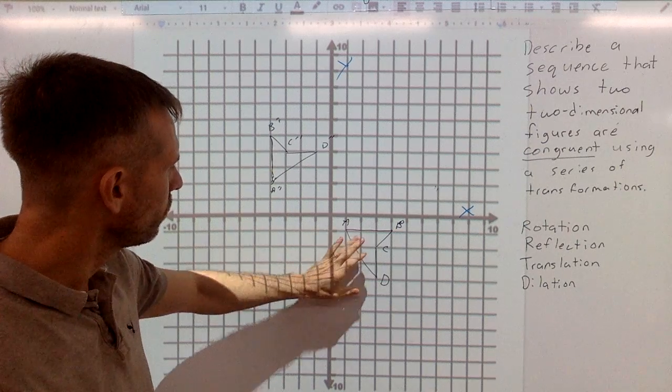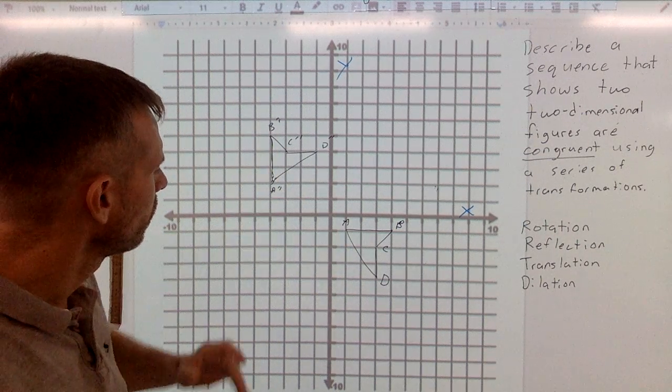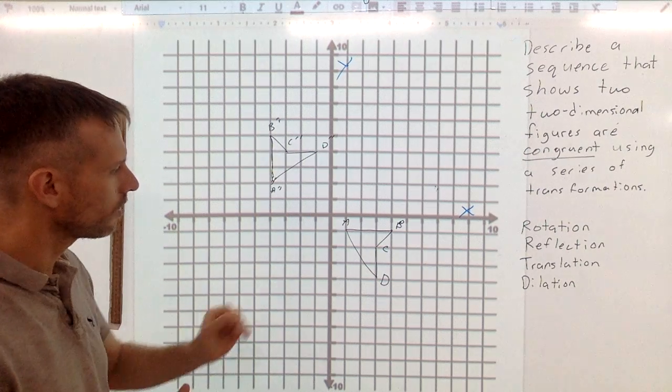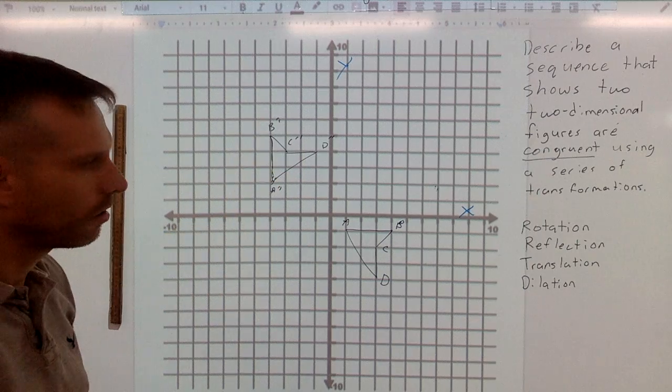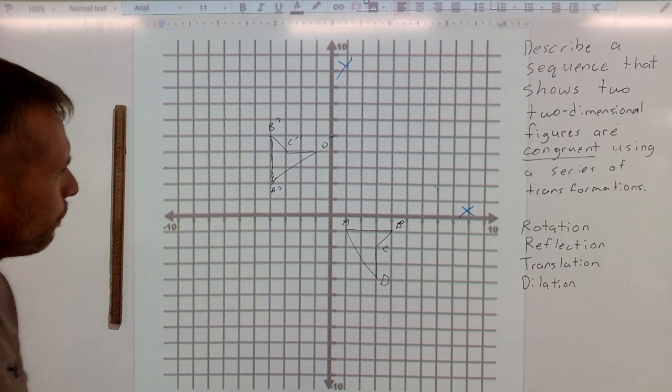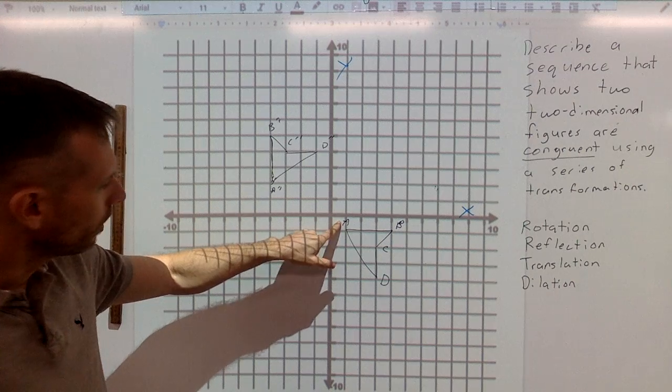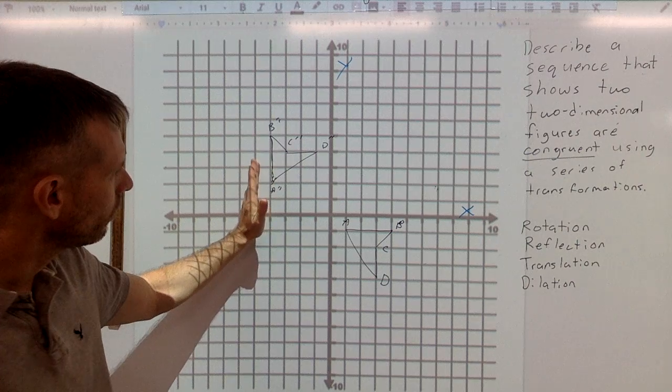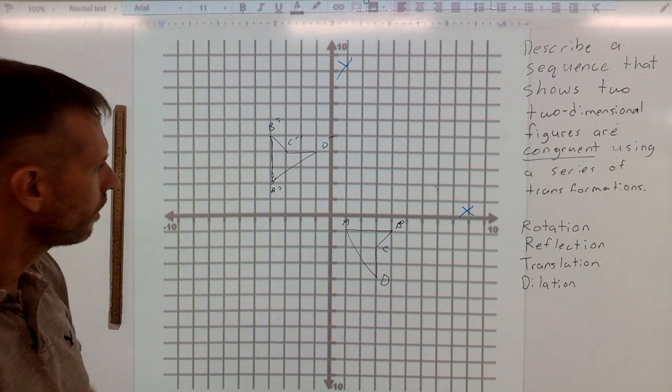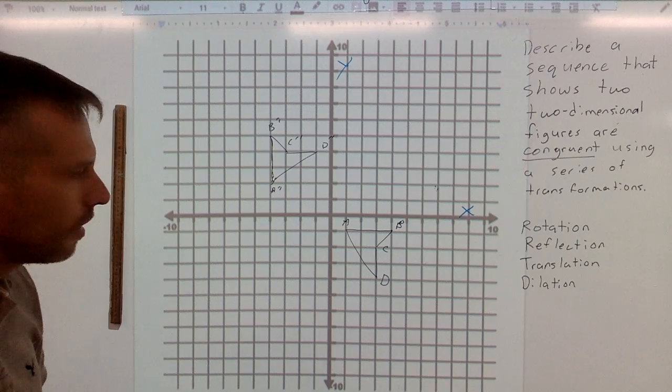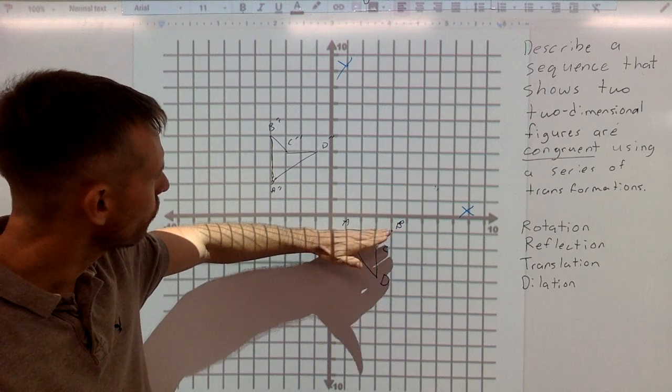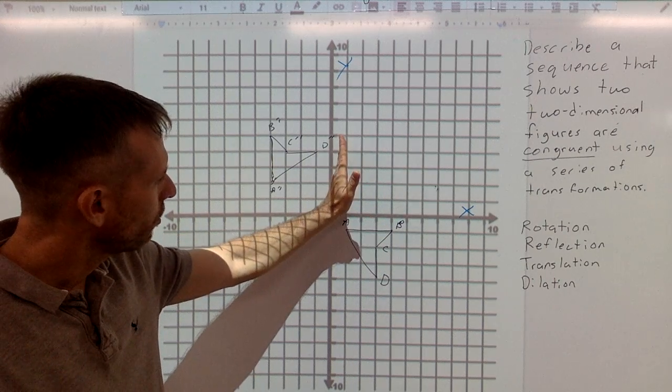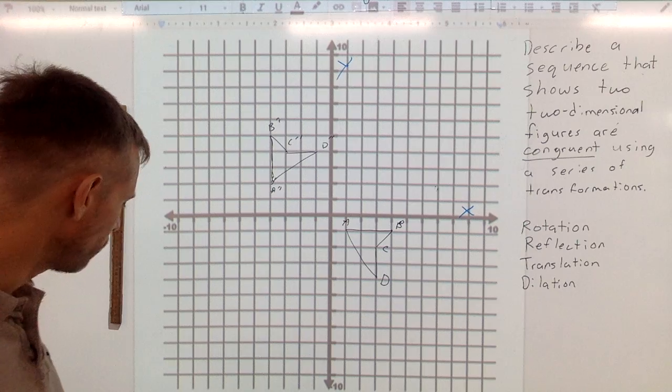Still trying to find how we move from this original image to here using a series of transformations. Again, they're congruent images. Same size, so probably won't need a dilation. But you notice if I see the orientation of A and B, it's going sideways here, and here it's going up and down. So that kind of makes me think that there's some kind of a rotation happening here. And actually, I think it's pretty clear to see that first we could rotate it perhaps 90 degrees counterclockwise. So let's go ahead and do that.